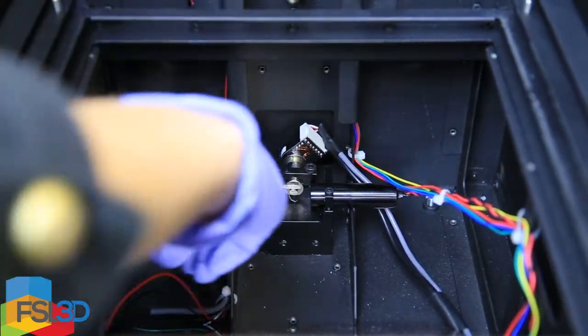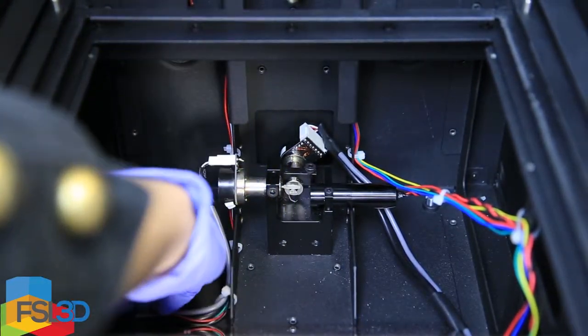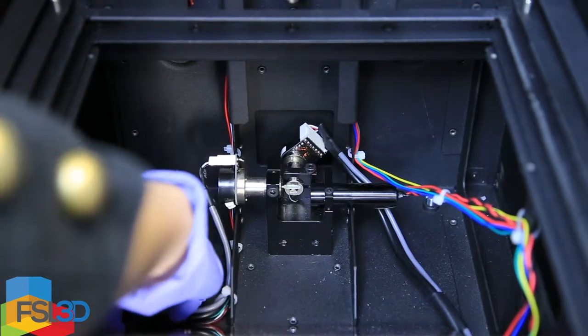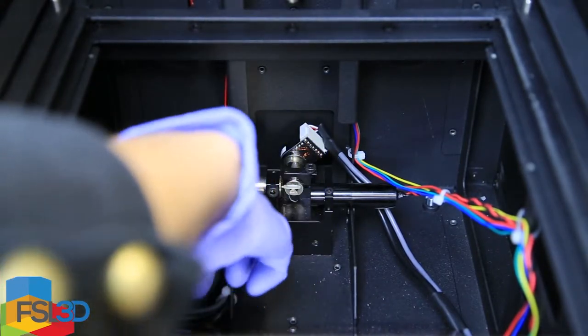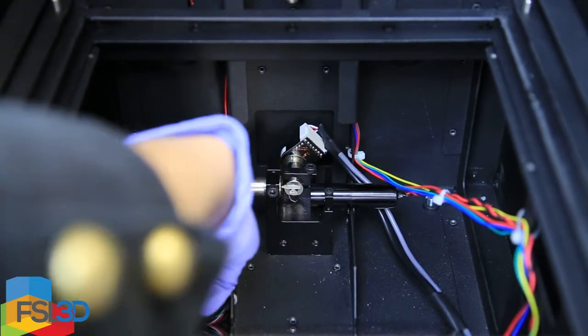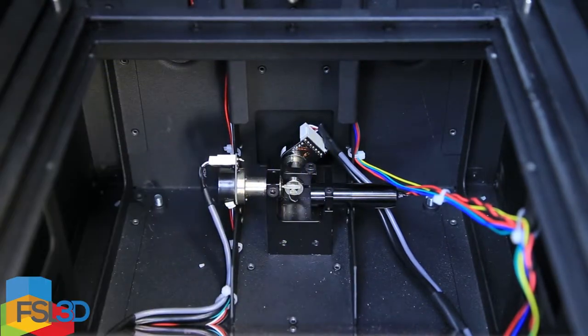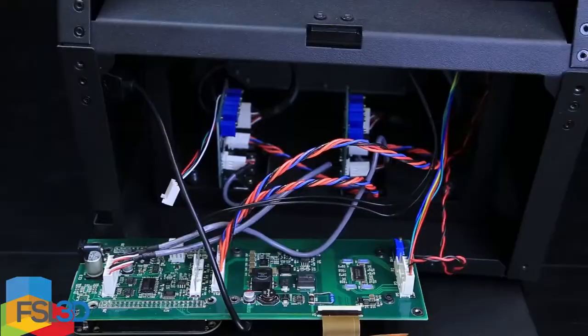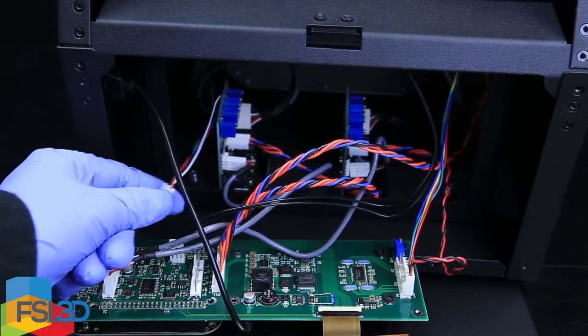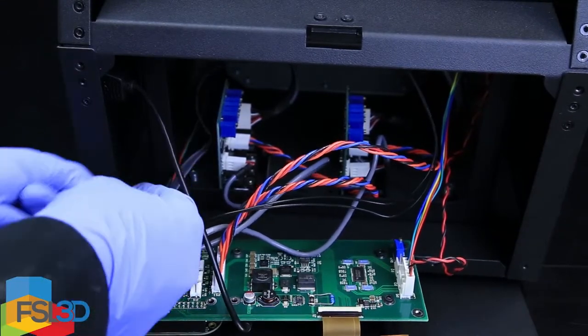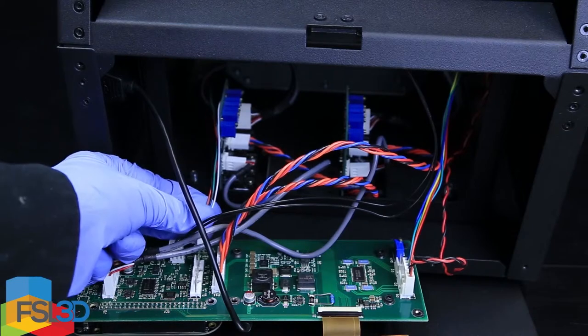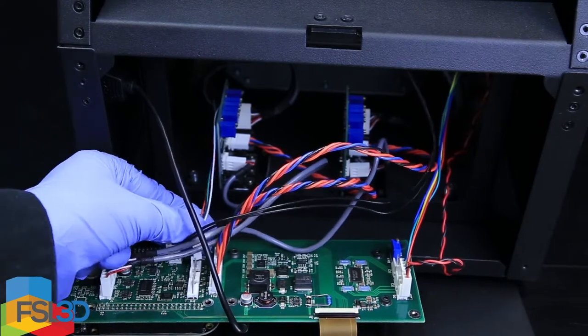Organize the remaining wire around the mirror and out of the path of the laser. Connect it to the connector labeled Y-limit. Don't force the pins. Keep in mind that the connector only goes one way.